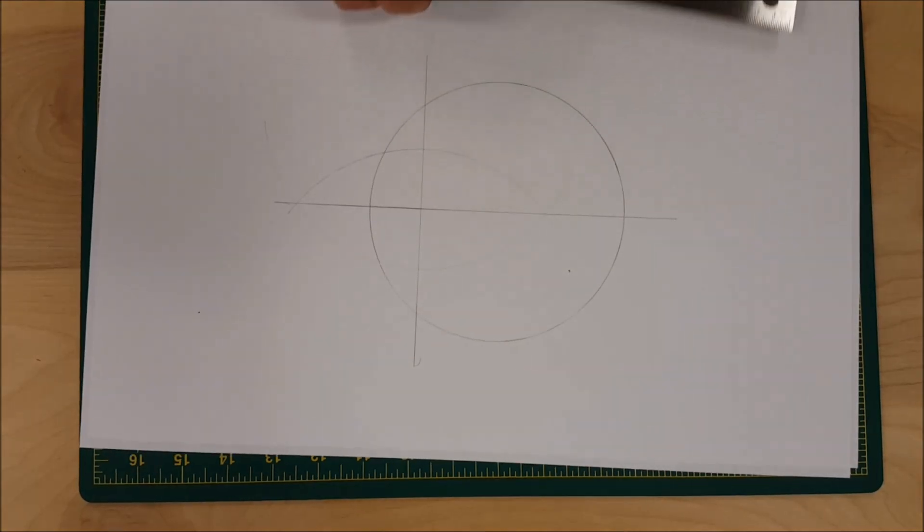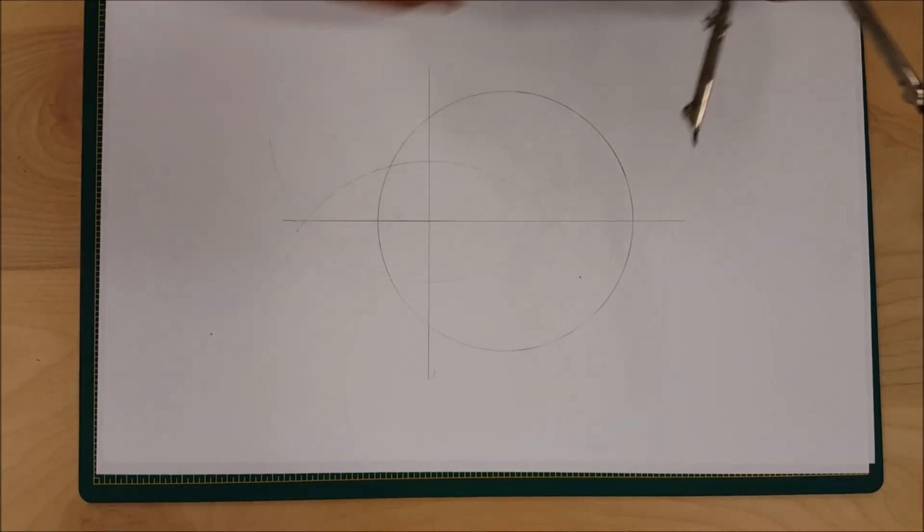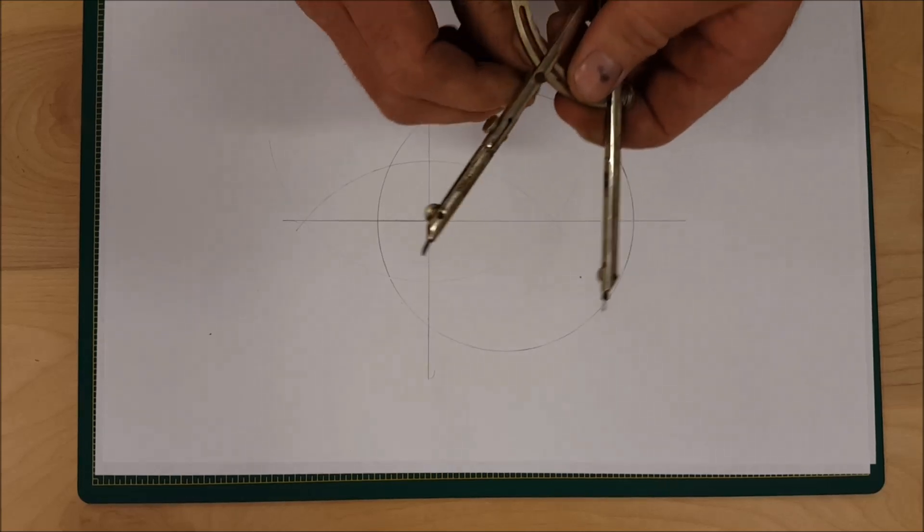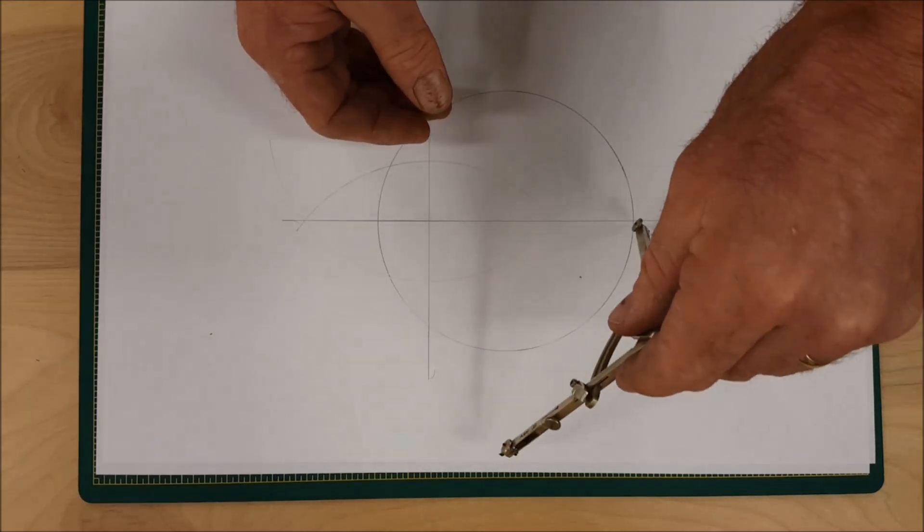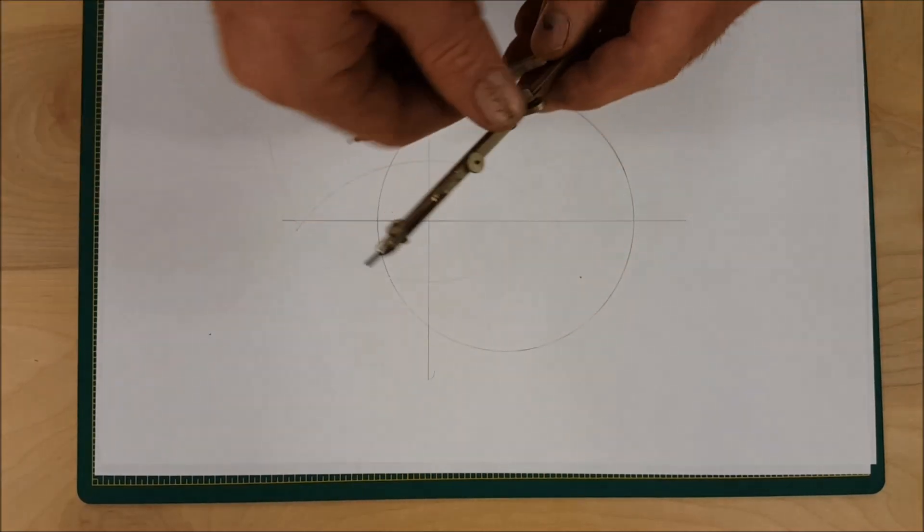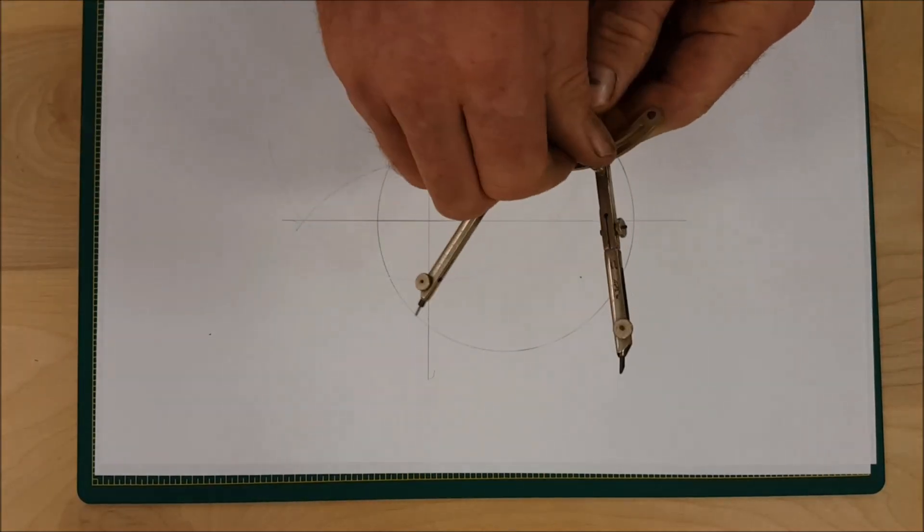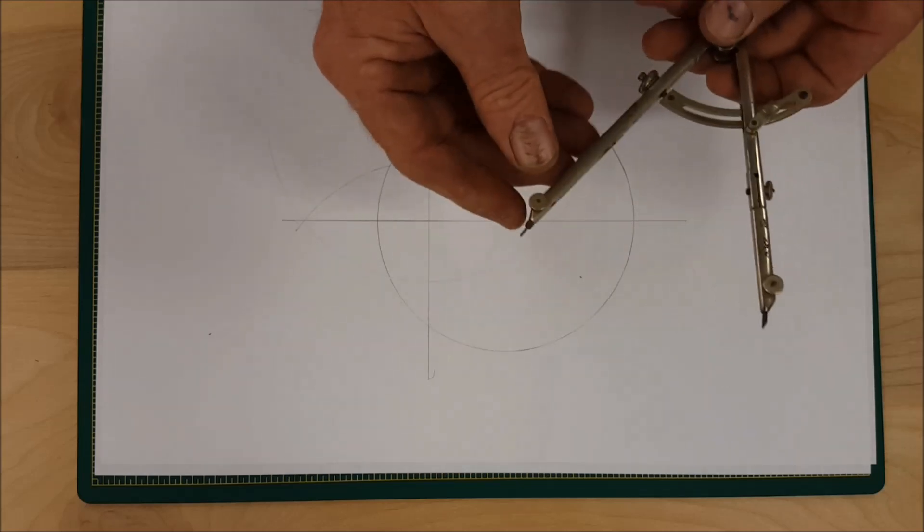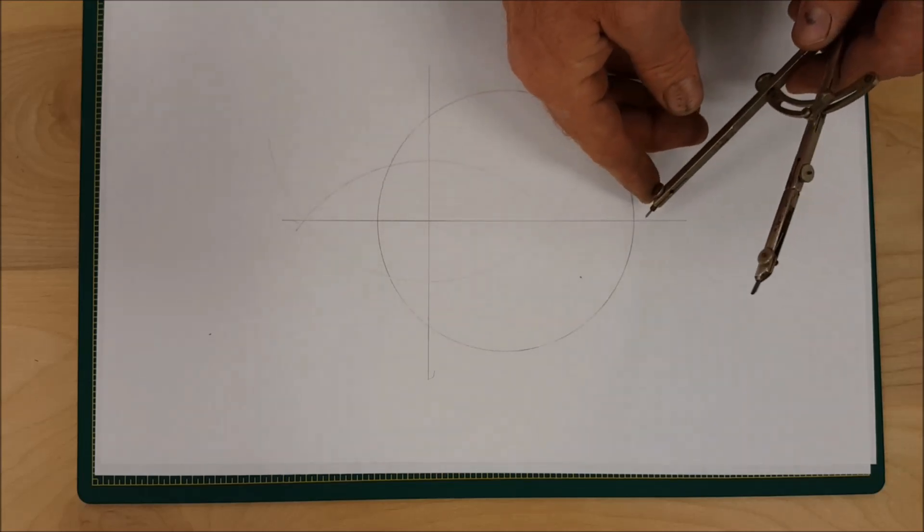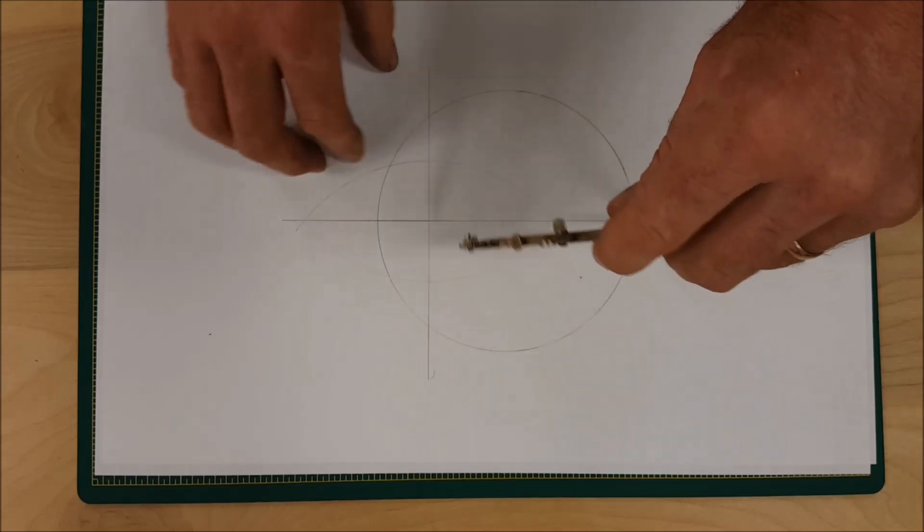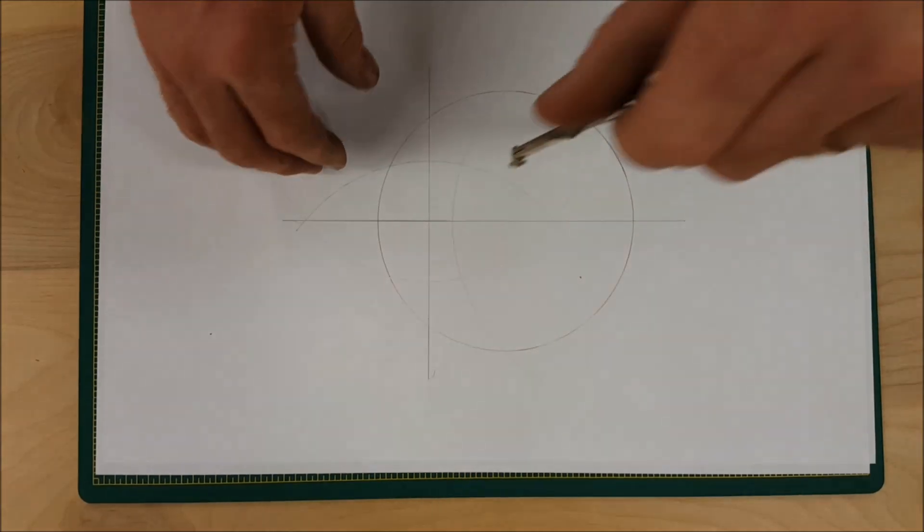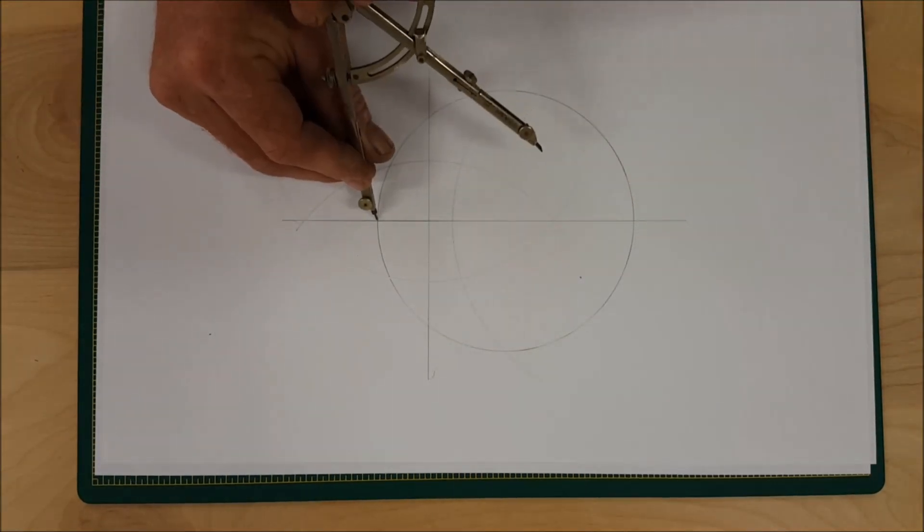The next step is to draw... I'm going to make this a little larger. Again, completely arbitrary. Let's see where that's going to cross through. I'm going to go a little smaller. I'm going to put the pivot where the bisected line goes through the circle. I'm going to draw another arc and do the same thing where it crosses on the other side.